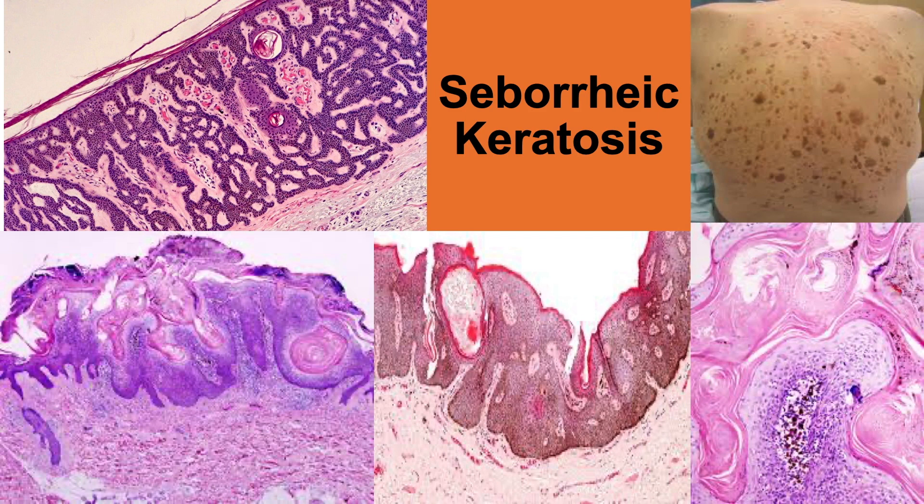Grossly, the lesions of seborrheic keratosis protrude above the surface of the skin, are soft, and vary in color from tan to black. A single heavily pigmented seborrheic keratosis may be confused clinically with malignant melanoma.